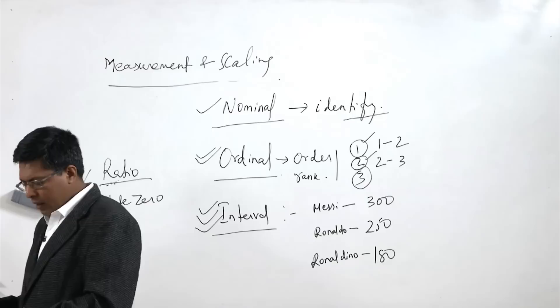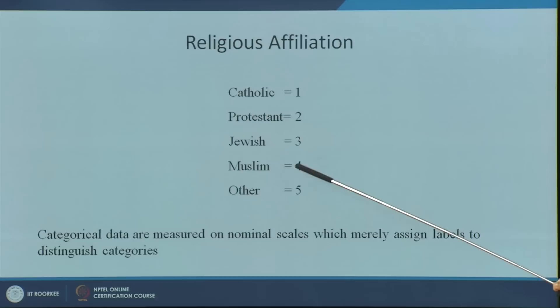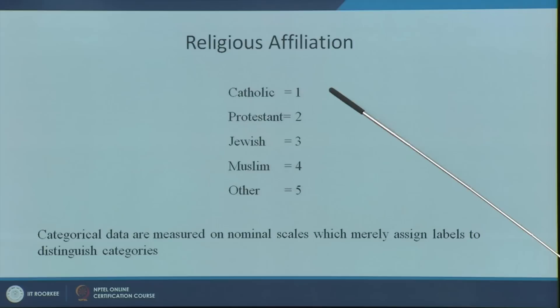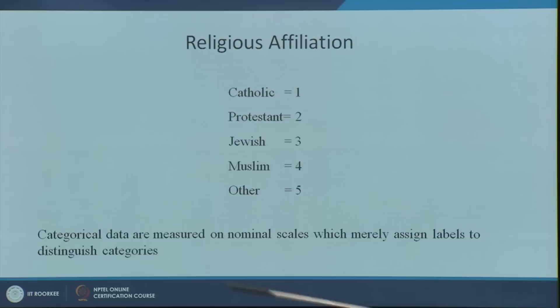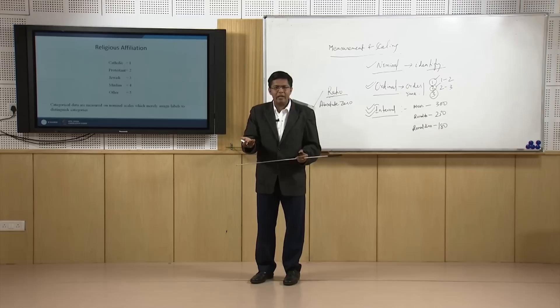For example, religious affiliation: Catholic is 1, Protestant is 2, Jewish is 3, Muslim is 4, other is 5. We do not mean that Catholic is the best and Protestant is the second best — no, it is just a code to identify. Similarly, products in a store: 1 means apparel, 2 means sports item, 3 means grocery — these are all categorical items and all fall into the nominal category. We assign labels to distinguish the categories, like male is 1, female is 2, sales zone Delhi is 1, sales zone Mumbai is 2.